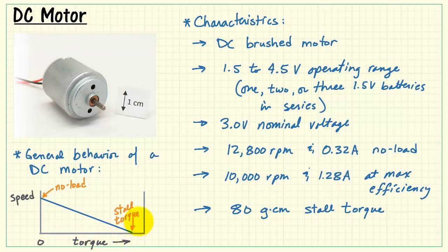At the other extreme, we have stall torque. This is where the shaft is completely stopped. That gave us a value of 80 gram centimeters. Between those two points, we have essentially linear behavior.